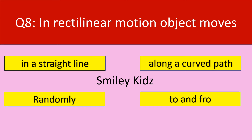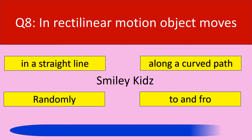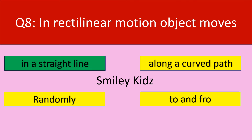Question number 8. In rectilinear motion, an object moves. Your options are in a straight line, along a curved path, randomly, to and fro. Your time starts now. Time up. The correct answer is in a straight line. In rectilinear motion, an object moves in a straight line.